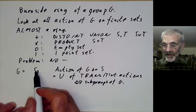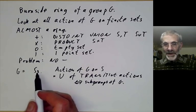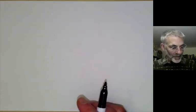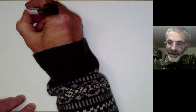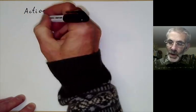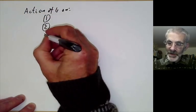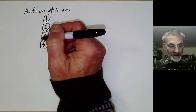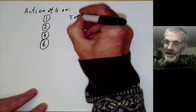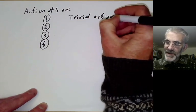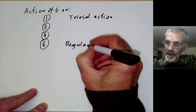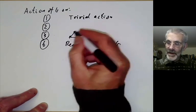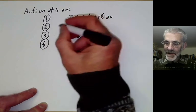For S3, there are essentially four different sorts of subgroup - some are conjugate, so that doesn't really count. We can have an action on one element, two elements, three elements, or six elements. This is the trivial action on a one element set, the regular action of G on itself, the action of G on the points of a triangle, and the action on three points.